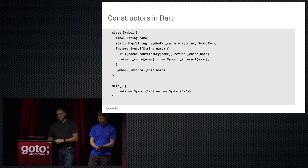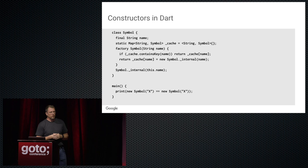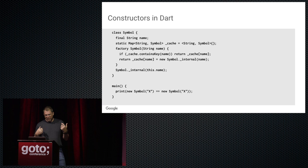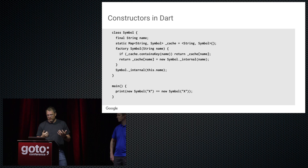In addition to constructor semantics, Dart also has factory constructors. Unlike Java, where you're bound to returning the instance the system creates, in Dart you can return a different object. In this example, a Symbol class constructor takes a string and returns a symbol, but these symbols are canonicalized — sometimes returning a previously created symbol. This is a complete implementation of a symbol table in Dart, and it shows that two new symbols created with the same string are identical.